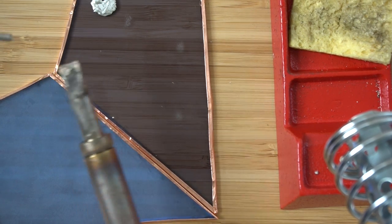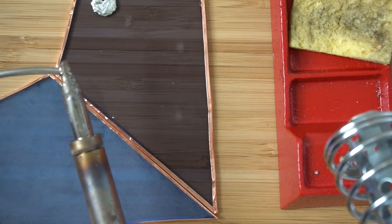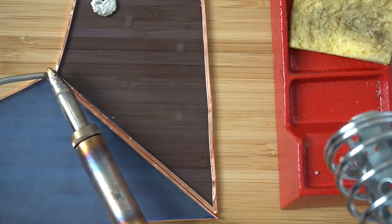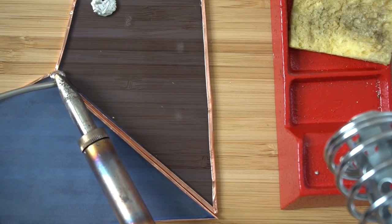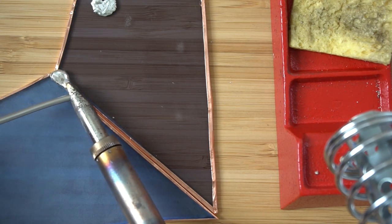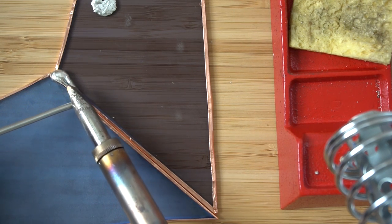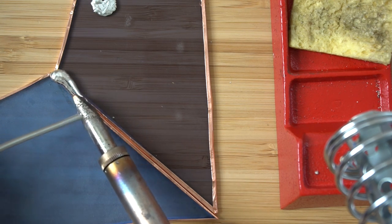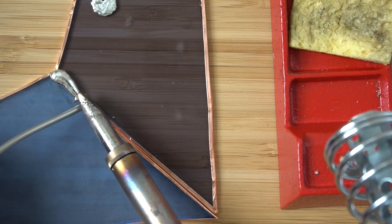I think there's something on my soldering iron that is preventing it. Here we go. So melt it. And then you just want to keep melting it along the copper foil. I'll usually do this and then smooth it out after.